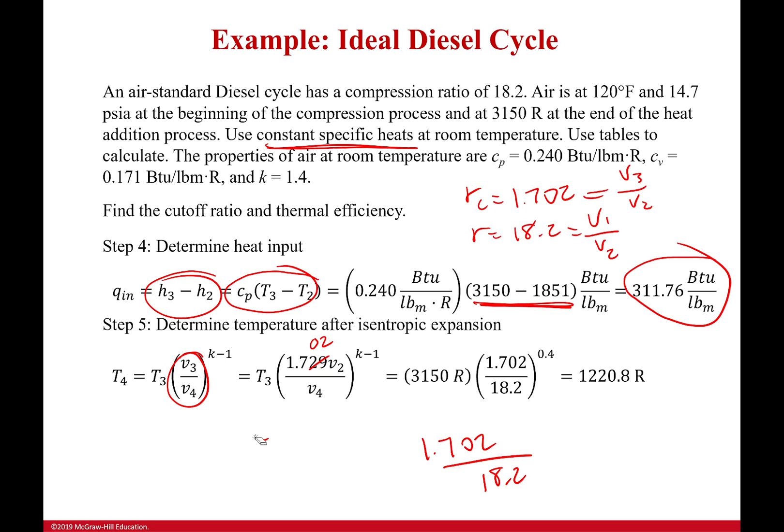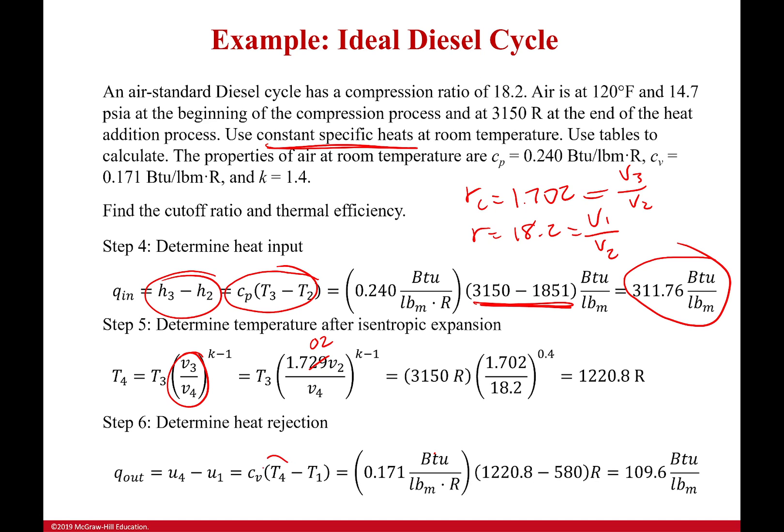Now, if we do that, okay, we got everything here. We get our temperature as 1,220.8 Rankine. And this will now let us find out what the heat output of our system is, the heat rejection of our system. And that's going to be simply T4 minus T1. Second thing to notice here is I'm using specific heat at constant volume because the first process was constant pressure. The last process is constant volume. Okay. So we have to use CV there. Plug it in and I get 109.6 BTUs per pound mass.